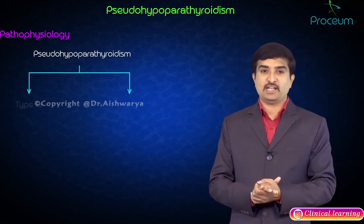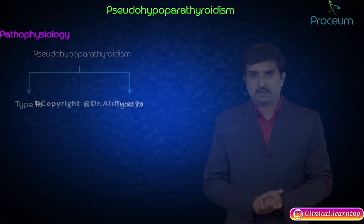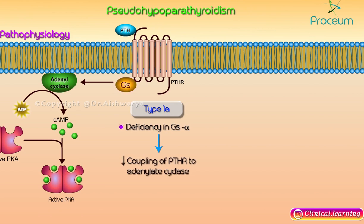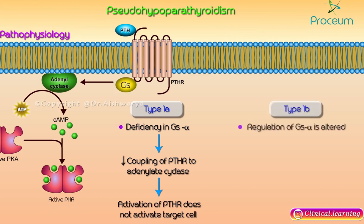In Type 1a, there is a deficiency in the GS alpha component, which leads to decreased coupling of the PTH receptor to adenylate cyclase, such that activation of the PTH receptor does not activate the target cell. In Type 1b, the regulation of GS alpha is altered such that the target cell is not activated by stimulation of the PTH receptor.